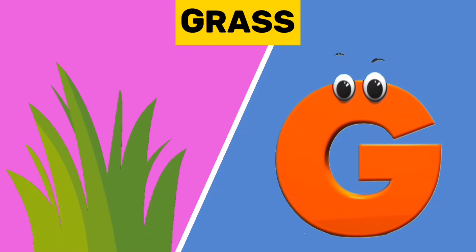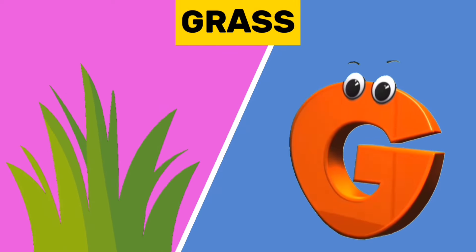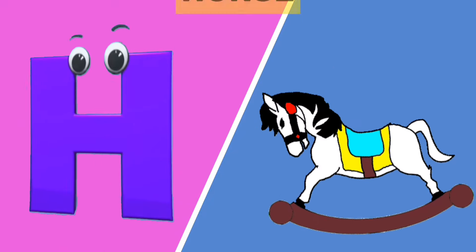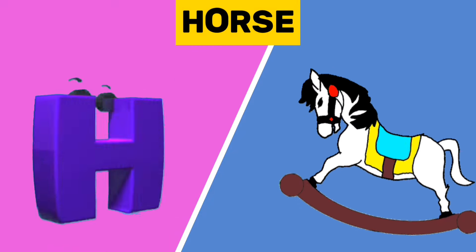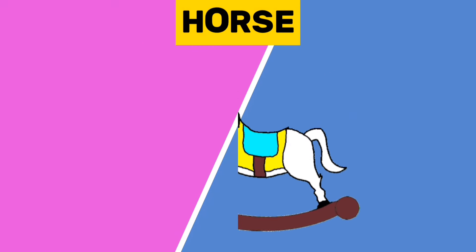G is for grass. G, G. Grass. H is for horse. H, H. Horse.